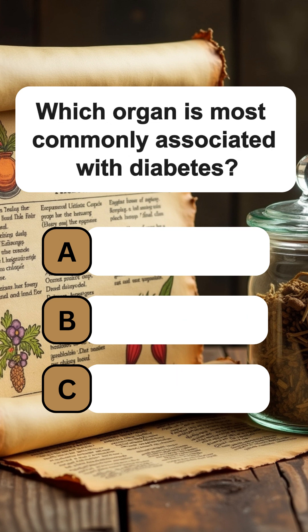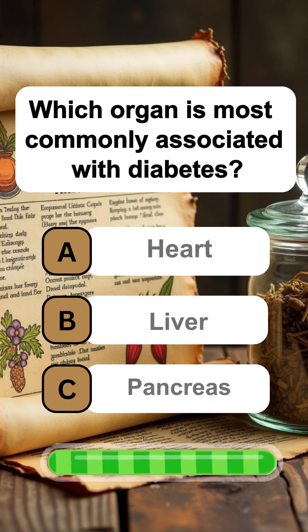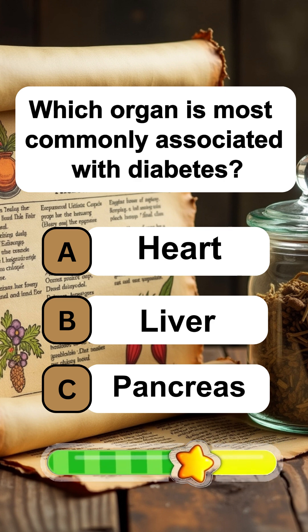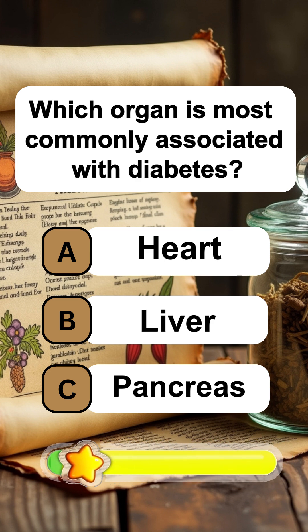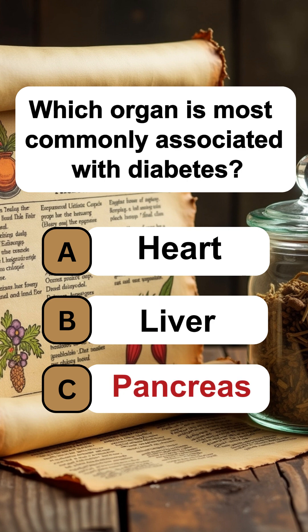Which organ is most commonly associated with diabetes? The answer is C: Pancreas.